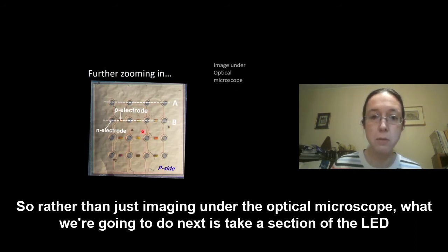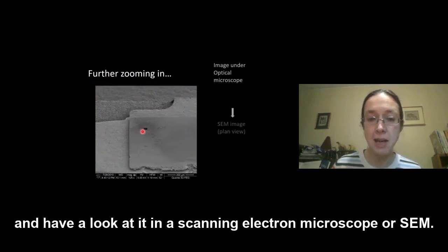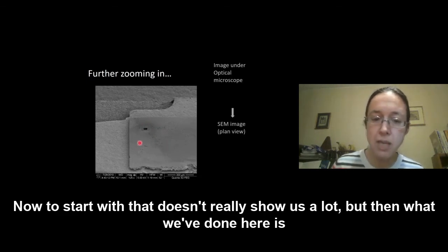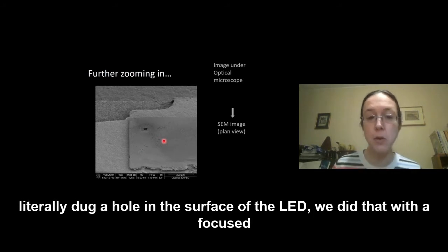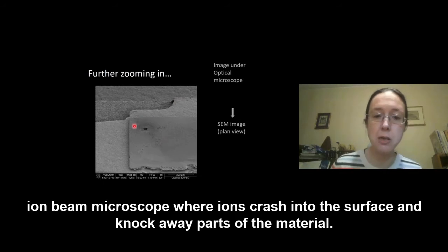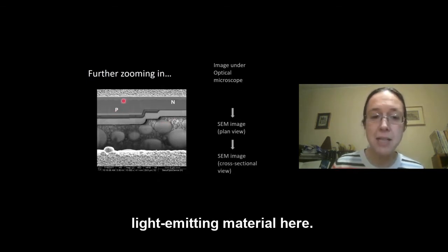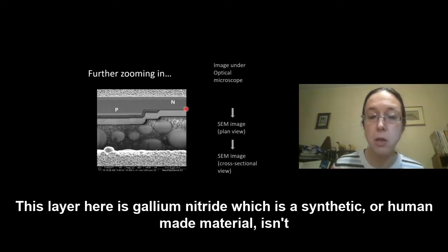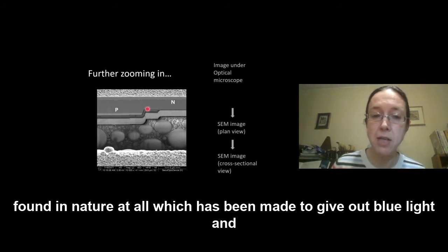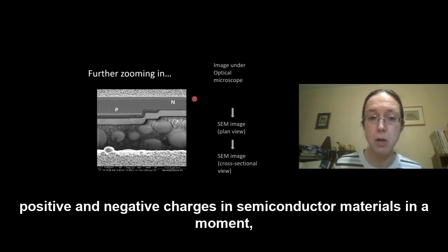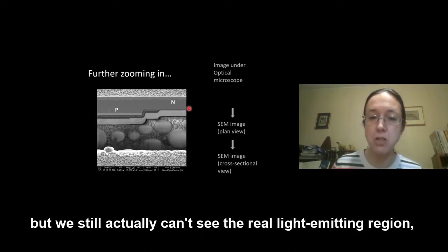So rather than just imaging under the optical microscope what we're going to do next is take a section of that LED and have a look at it in a scanning electron microscope or SEM. Now to start with that doesn't really show us a lot but then what we've done here is we've literally dug a hole in the surface of the LED. We did that with a focused ion beam microscope where ions crash into the surface and knock away part of the material. So now we can zoom in still further. So now finally we can see the light emitting material here. This layer here is gallium nitride which is a synthetic or human made material. It isn't found in nature at all which has been made to give out blue light. And we've got the metal layers above and below it which are going to get electricity into those layers which label P and N. And we'll talk a bit more about positive and negative charges in semiconductor materials in a moment. But we still actually can't see the real light emitting region. We're going to have to zoom in still further.